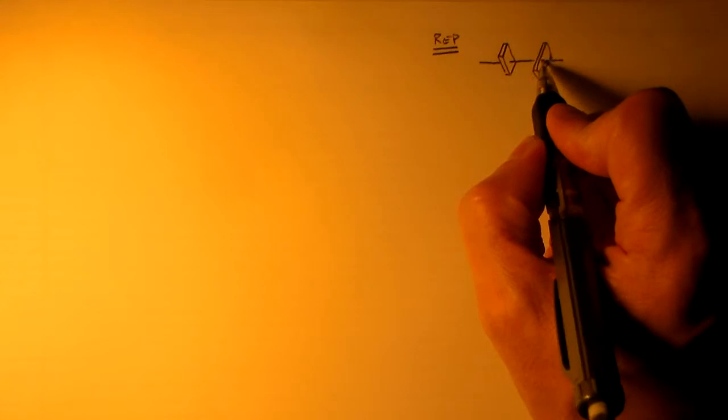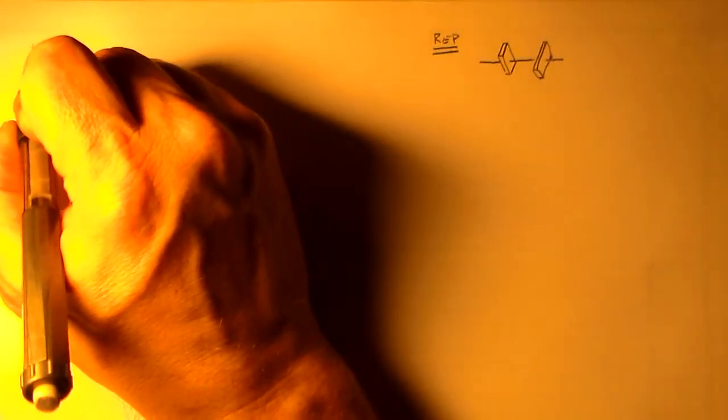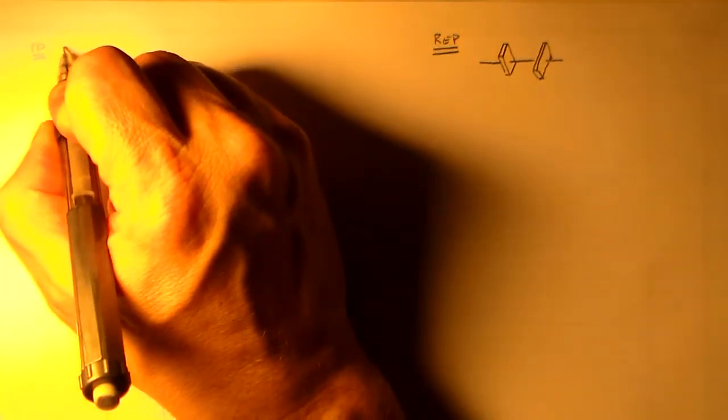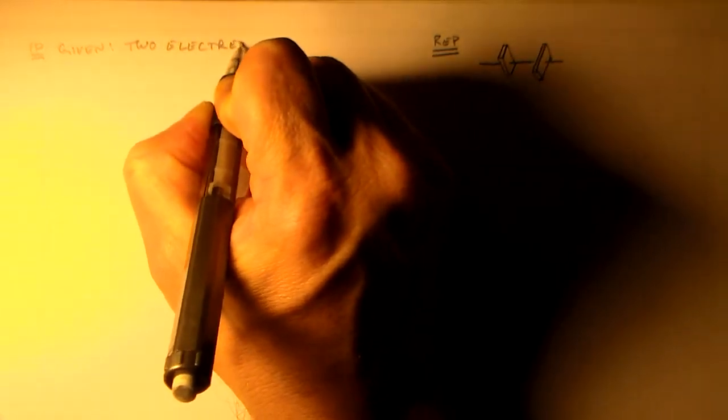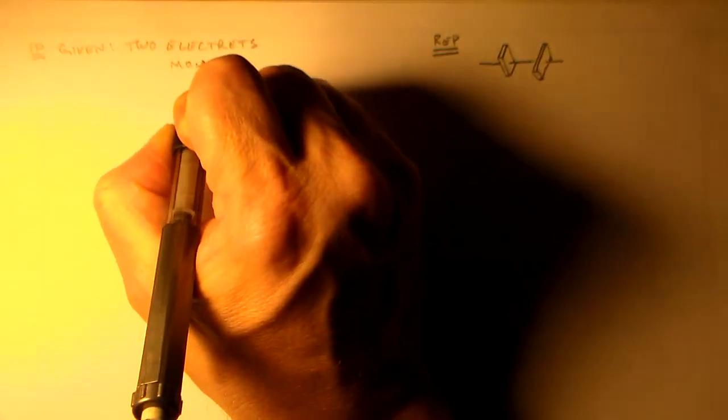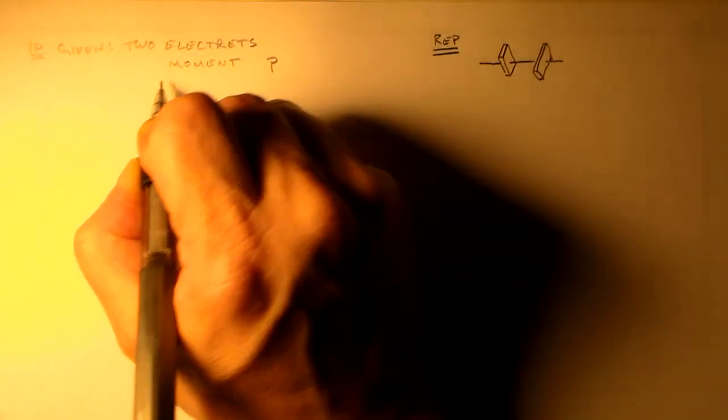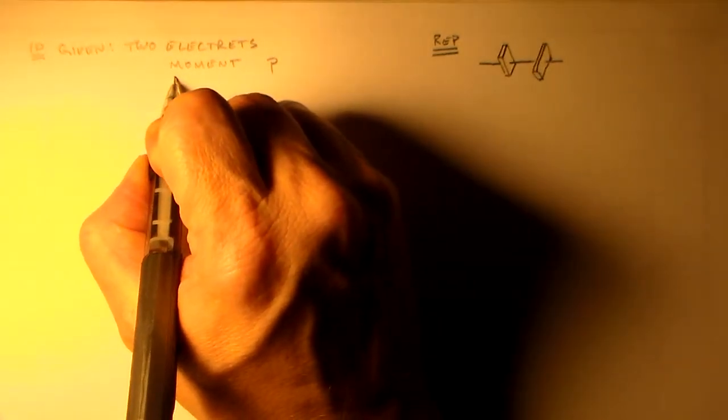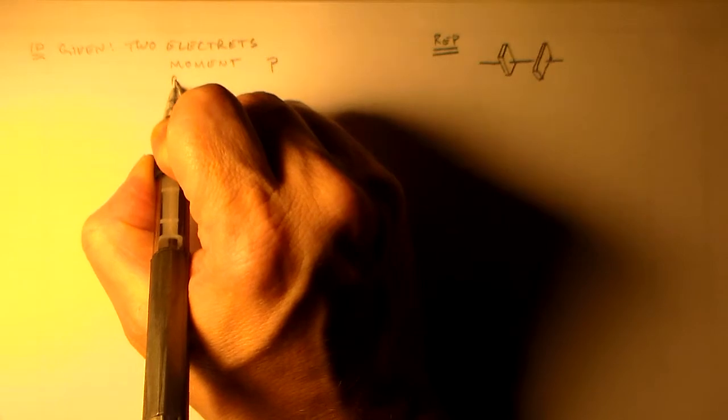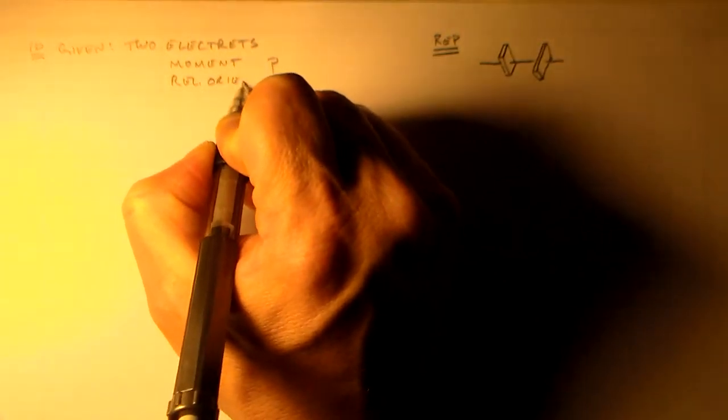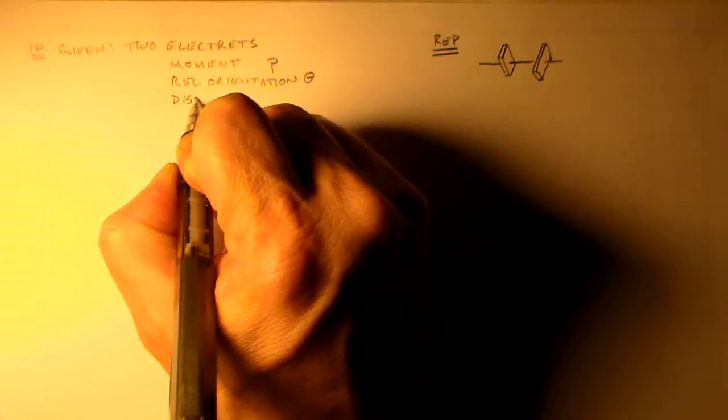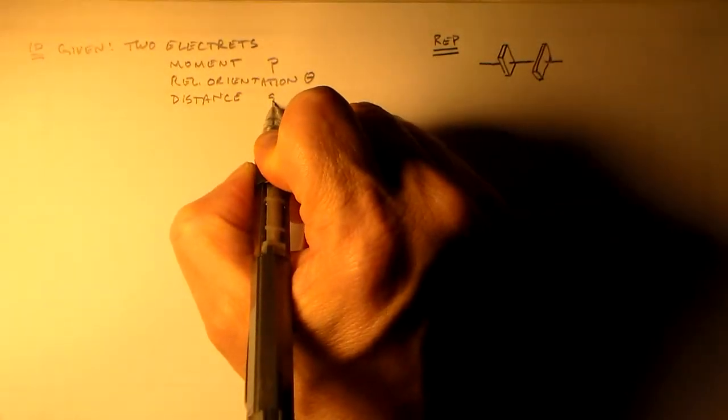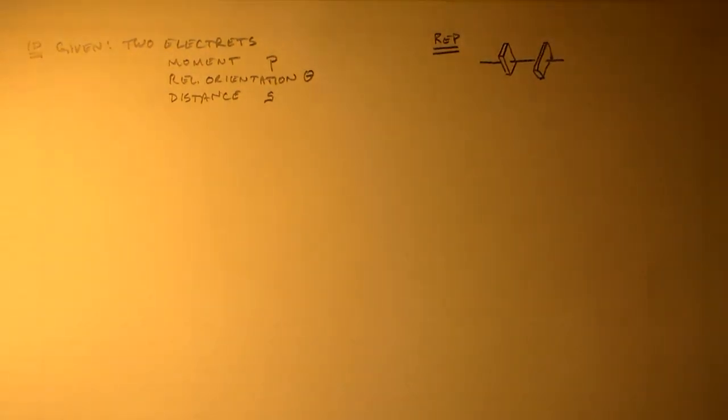I told you to go ahead and model these two bars as dipoles. So that means that we're given two electrolytes. And they're of equal moment p. And they have a relative orientation theta. And there's some distance away. We can call that distance whatever we want. Let's call it S for separation.